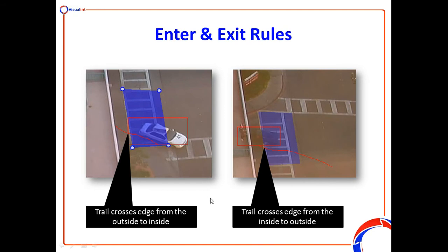The enter and exit rule works by looking at the trail. The box is drawn around the object and maintained as it moves, and we also leave a little trail behind that object to show where it has come from. An example of an entering-the-zone rule is where that trail crosses the edge from outside to inside the blue zone, and an exit rule is where the trail exits from the blue zone to outside it. That way we can trigger an entry rule and an exit rule as required.